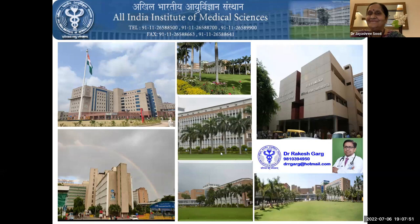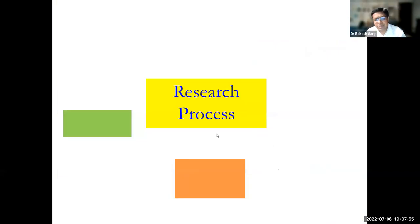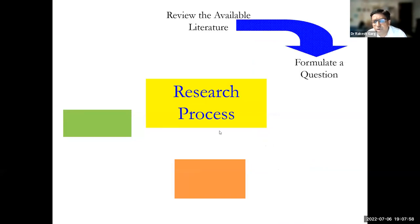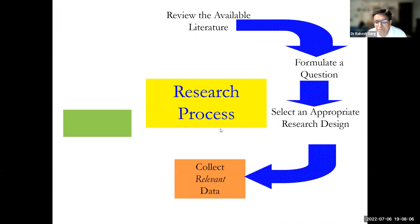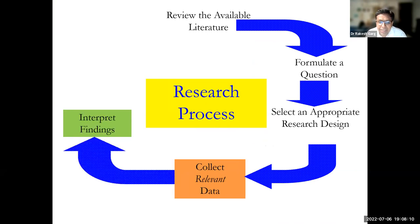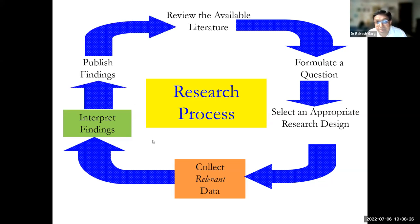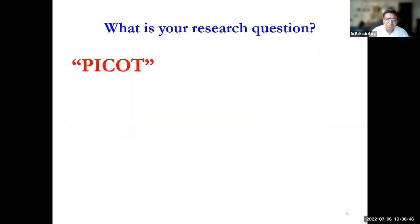I bring greetings from my institute. Let me take you through the research process cycle. When we want to do research, we base it on experience and limitations, review the literature, formulate a research question, set up an appropriate design, then collect relevant data, and then this data has to be interpreted. Today we'll be touching on two aspects: what exactly p-value and confidence interval stand for, so that when we publish or someone wants to reinterpret or read our article, they can interpret it appropriately.